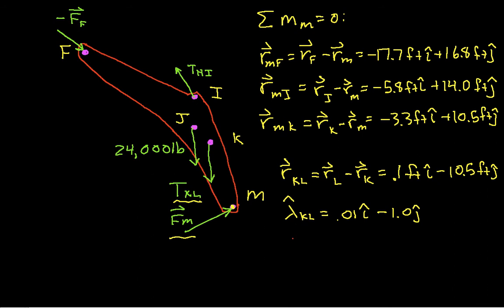Okay, so here's the relative positions of the forces due to the forces, and it just occurs to me I missed R-M-J, which is R-J minus R-M, and that's minus 5.6 feet I-hat plus 11.2 feet J-hat.